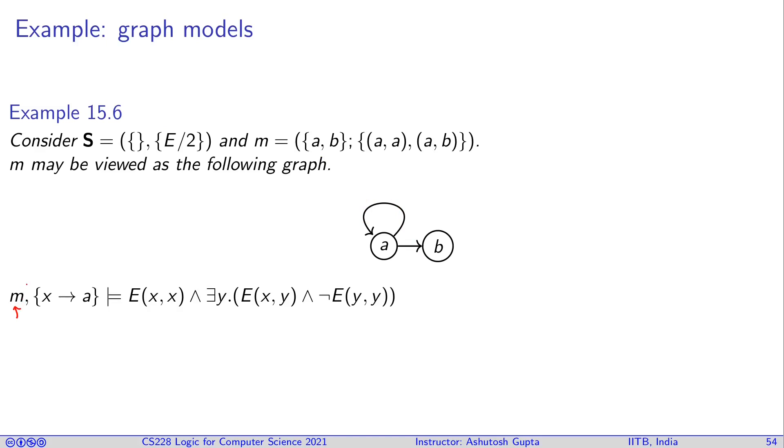Look at this formula. In this formula, you have the model M, and then your x is assigned to A. So you can say that E of x is true. You can say there exists a y such that E is true means from x you can go to y, right? And there is no self loop on one, so there's no self loop. This model assignment satisfies this formula. So sometimes viewing your models as graphs, if you have certain kind of predicates, it's easy, and you can interpret them as if you're interpreting graphs.